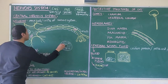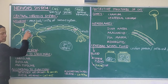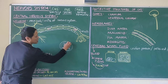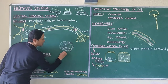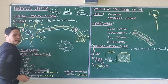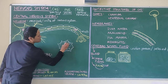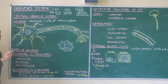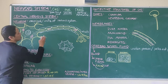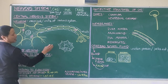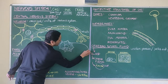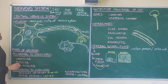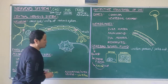A neuron is exactly like a general cell, but it just has finger-like projections that project out. And it gives this special kind of shape to the cell. Most of the time, you find that the neuron has one of these finger-like projections that elongates, and it forms this typical structure.